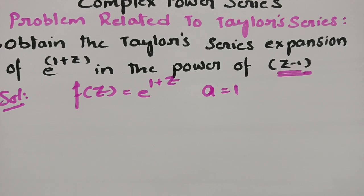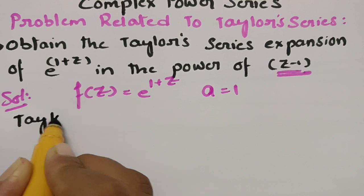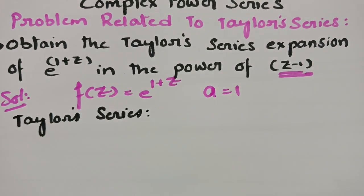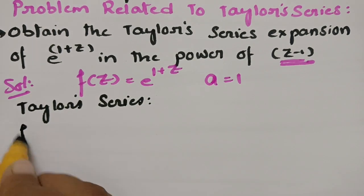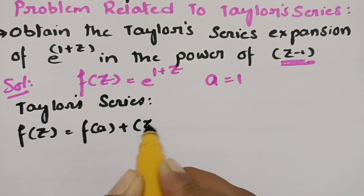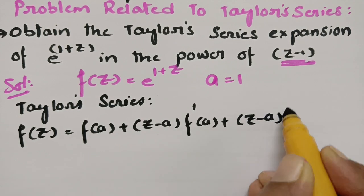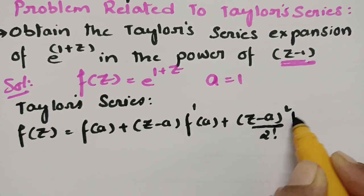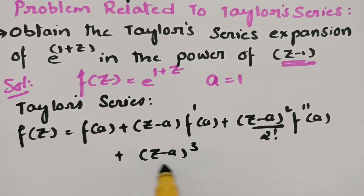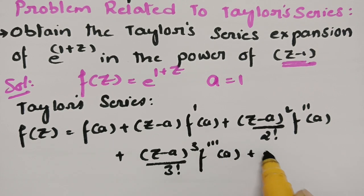According to the Taylor series expansion, we have f of z is equal to f of a, plus z minus a into f dash of a, plus z minus a whole square by 2 factorial into f double dash of a, plus z minus a whole cube by 3 factorial into f triple dash of a, and so on.